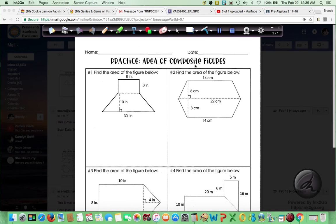So with composite figures, the first thing we want to do in any figure is break it into basic shapes that we can easily find the area of. And then we just add the separate areas together so we can get the area of the whole shape.